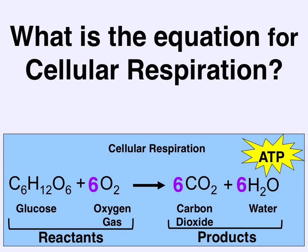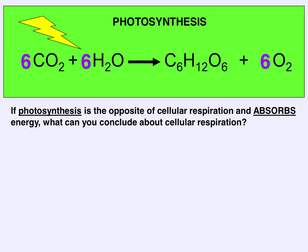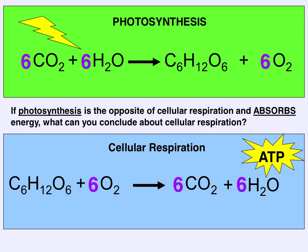In photosynthesis, light energy is coming into the system to drive the production of glucose. When that's available, we use six molecules of CO2 and six molecules of water to produce one molecule of glucose plus six molecules of oxygen gas. So if photosynthesis is the opposite of cellular respiration, and photosynthesis absorbs energy, then cellular respiration has to release energy — and it does, in the form of ATP.